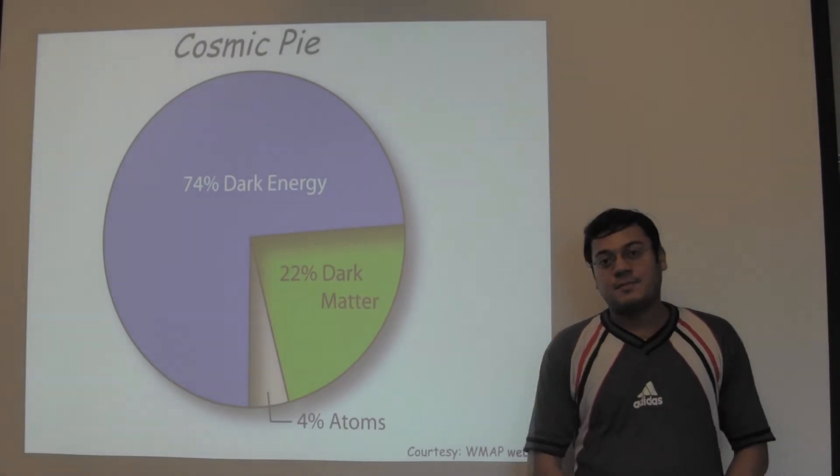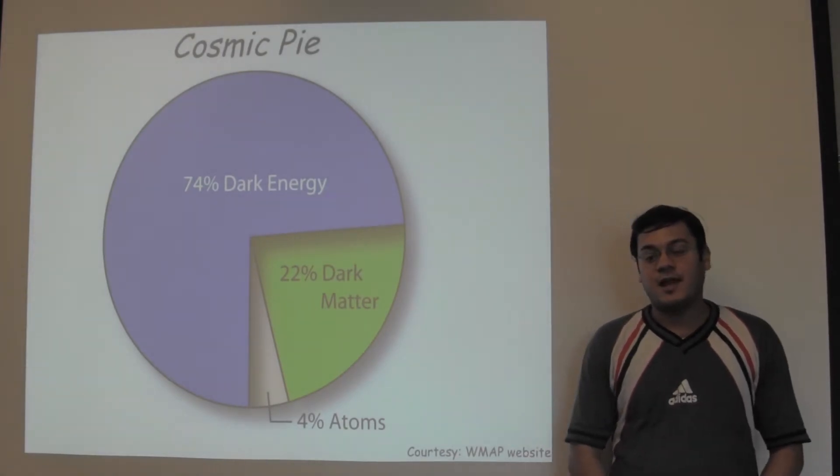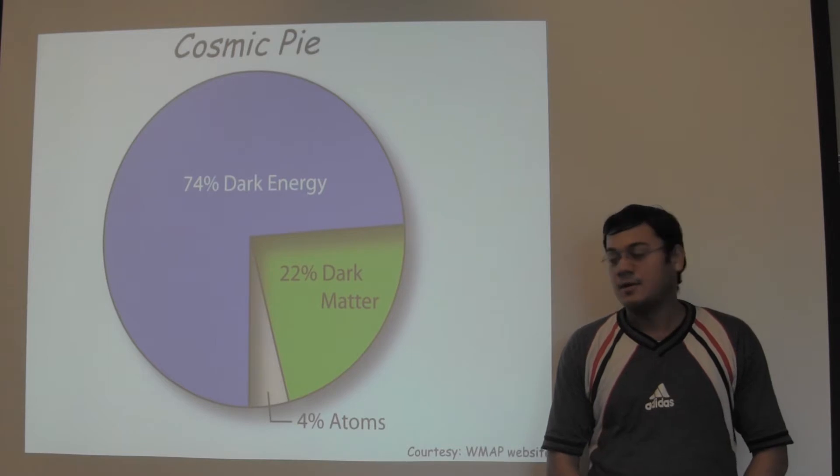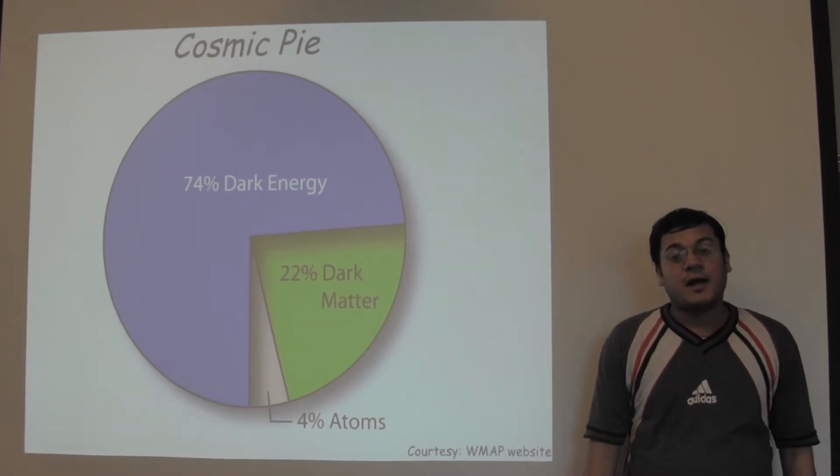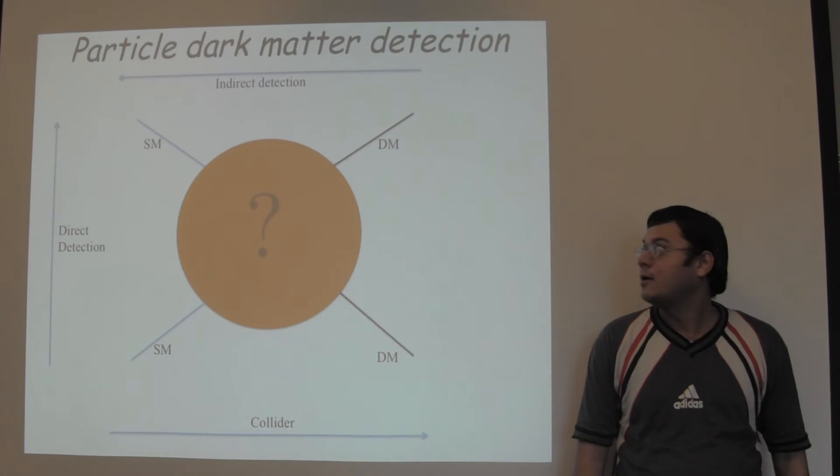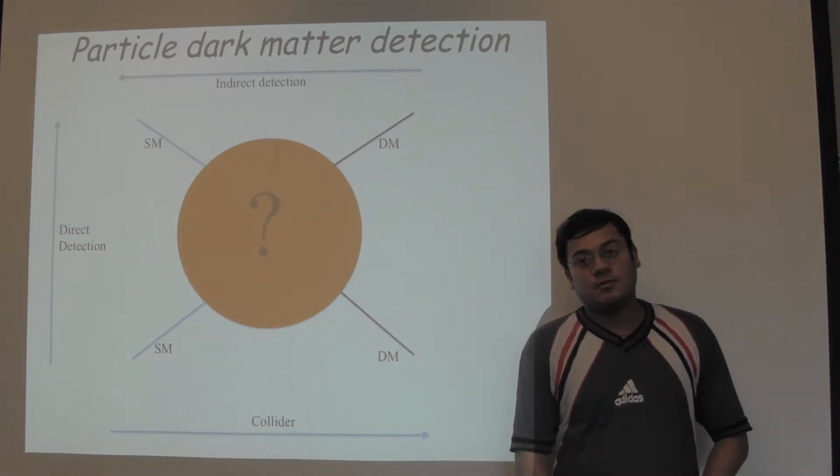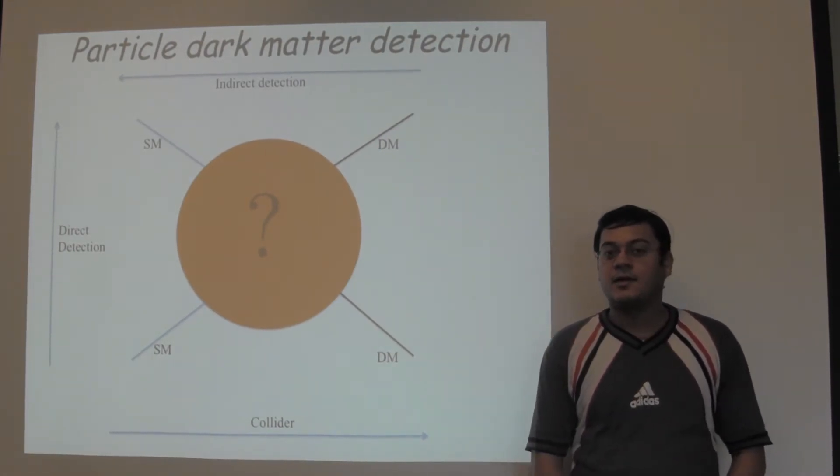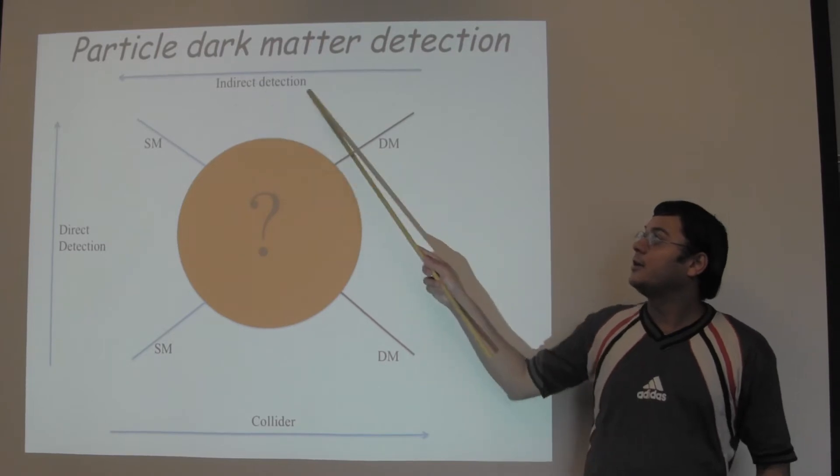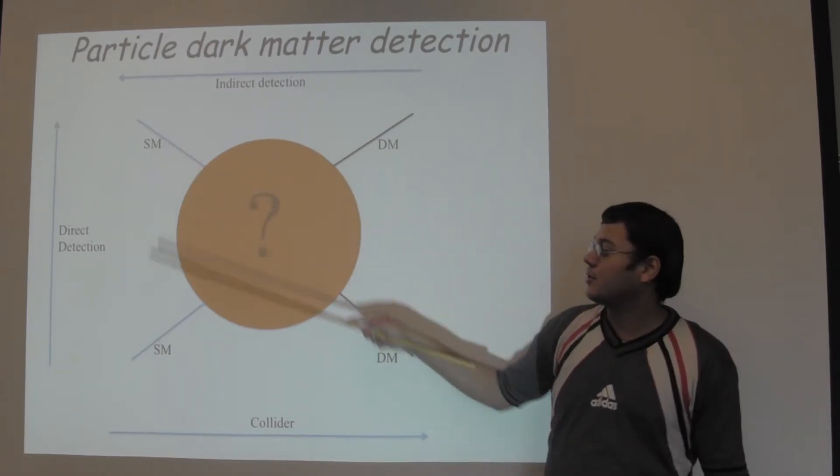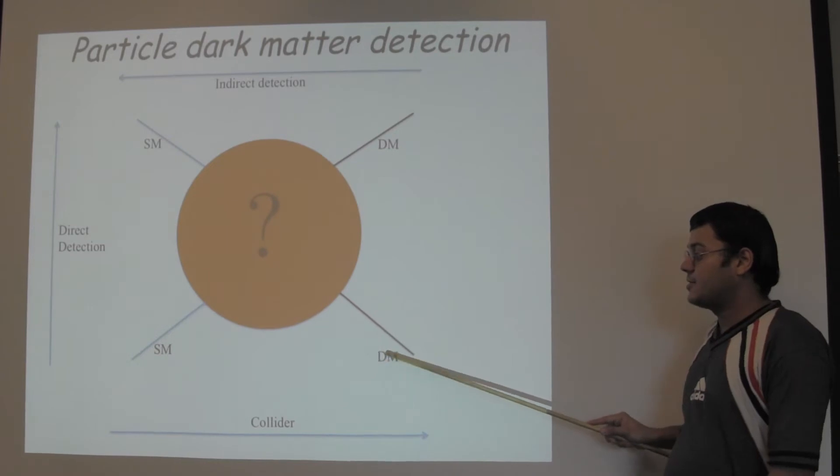As is well known, dark matter has been discovered gravitationally at all scales of the universe. However, we still do not know the particle content of dark matter. One of the ways to know about the particle content of dark matter is called indirect detection in which we search for standard model final states coming from dark matter annihilation.